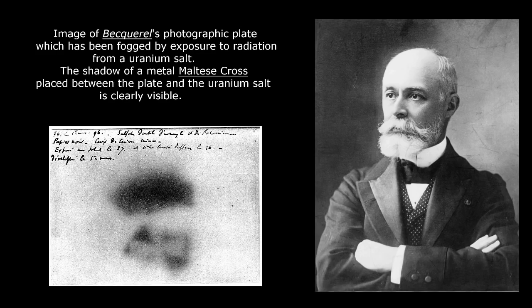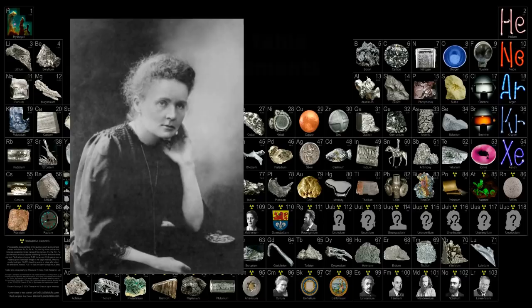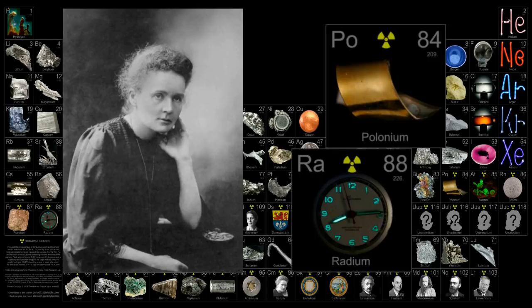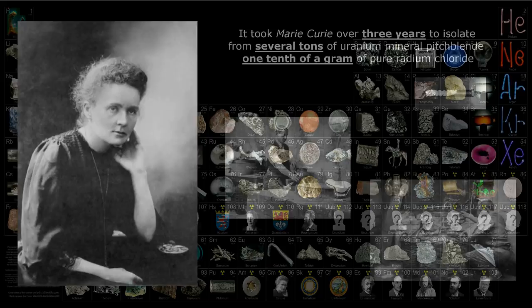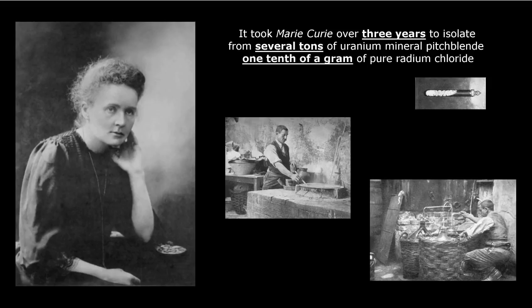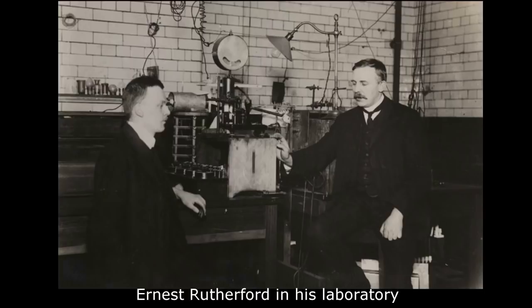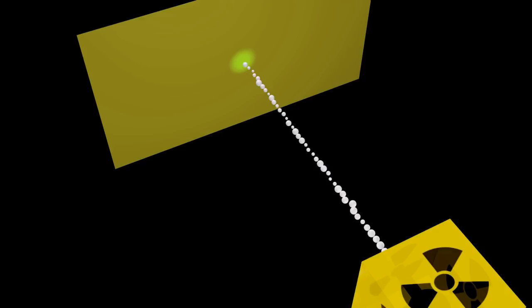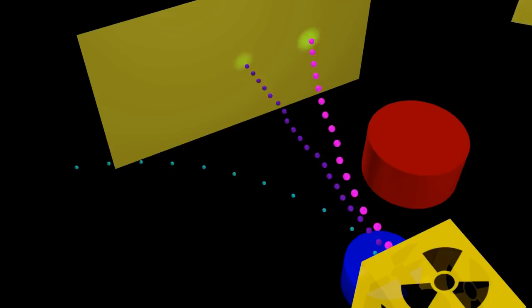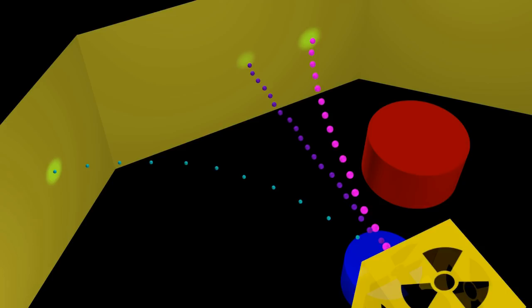The titanic work of Marie Curie allowed the discovery of two new chemical elements — polonium and radium — which were sources of radiation. It took Marie Curie over three years to isolate from several tons of uranium mineral pitchblende one-tenth of a gram of radium chloride. Then it was found, mostly by Rutherford, that the radiation from uranium or radium has a complicated structure. If we take a source of radioactivity and place it in a magnetic field, the radiation will split into three parts — conditionally painted red, green, and blue — named alpha, beta, and gamma particles.